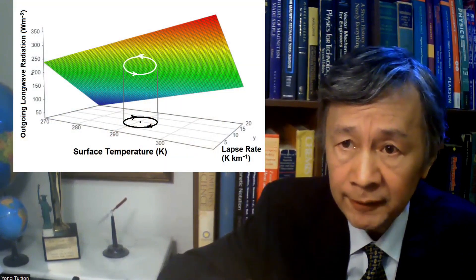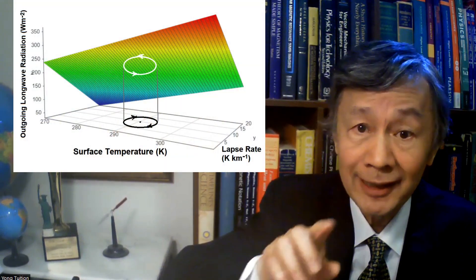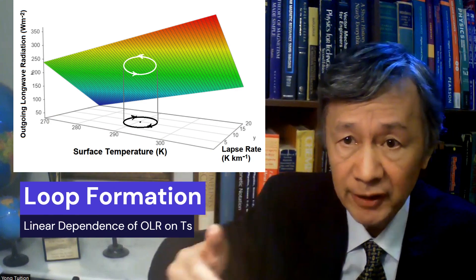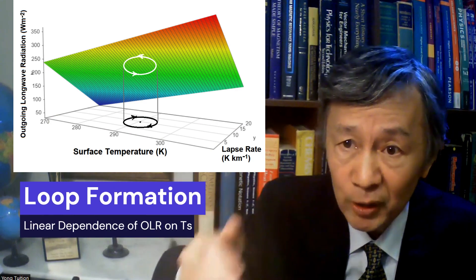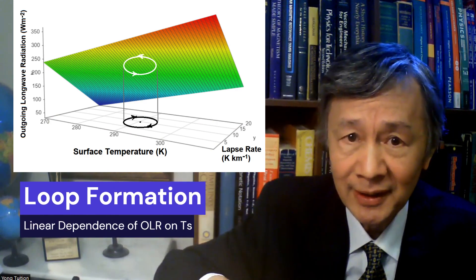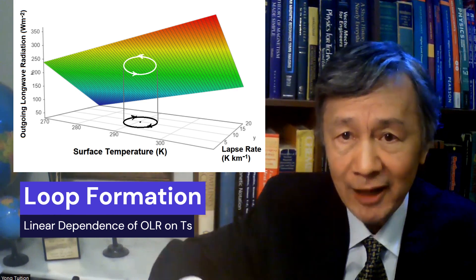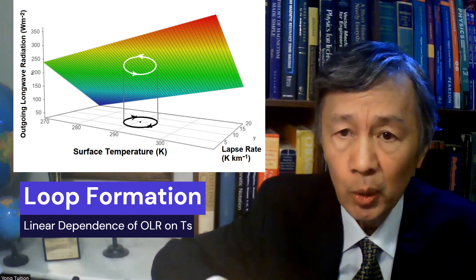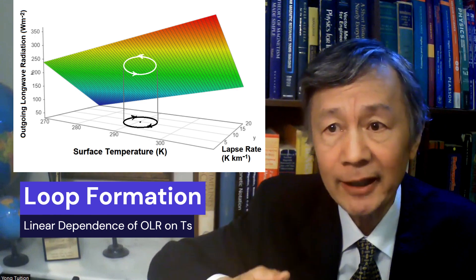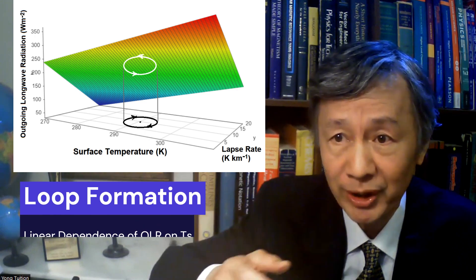I realized that a loop can be formed if the oscillations of the lapse rate and the surface temperature are 90 degrees out of phase, as shown in this diagram, which has nothing to do with any greenhouse effect such as water feedback.